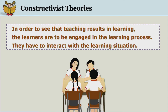To see that teaching results in learning, learners are to be engaged in the learning process and must interact with the learning situation. For example, if the teacher wants to develop the concept of friction, it is not enough to show some examples. The teacher has to be a facilitator and should organize activities in which children engage themselves by moving things or walking on smooth and rough surfaces, moving balls and objects on different kinds of surfaces, and realizing how friction affects movement.